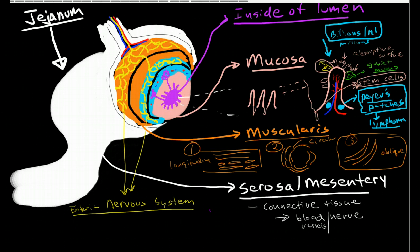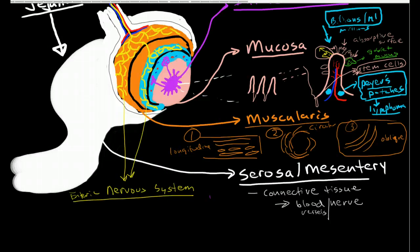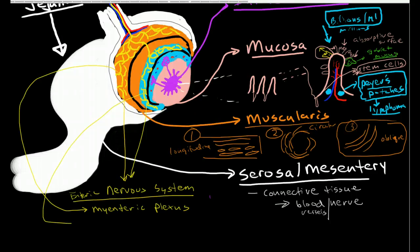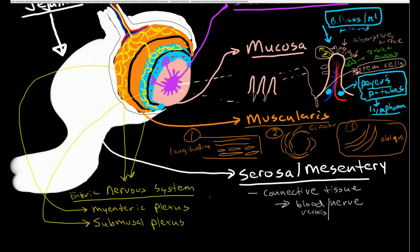Now this is made up of two layers. There is a myenteric plexus, and this myenteric plexus is on the outer layer of the longitudinal muscle. And then we have the submucosal plexus, and the submucosal plexus is primarily engaged with controlling secretions.